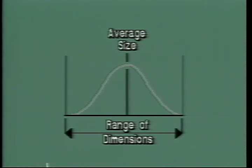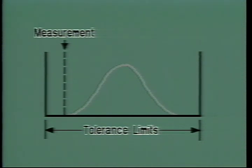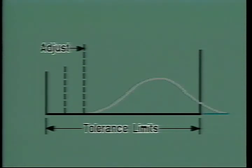Remember that the movement of the average size of the dimension is only one problem SPC will help you find. The other is changes in the range of the dimensions being produced. What if that part you measured was at this end of the curve, and instead of the center having moved, the process range had widened? Making the same adjustment as before would have created parts out of tolerance. You would have caused the very problem you were trying to prevent.